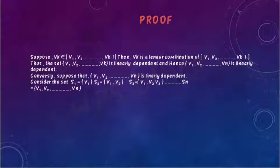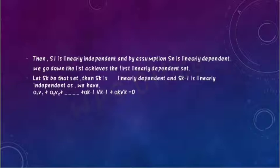Conversely, suppose that {V1, V2, ..., Vn} is linearly dependent. Consider the sets: S1 = {V1}, S2 = {V1, V2}, S3 = {V1, V2, V3}, ..., Sn = {V1, V2, ..., Vn}. Then S1 is linearly independent and by assumption Sn is linearly dependent. We go down the list and choose the first linearly dependent set; let Sk be that set.